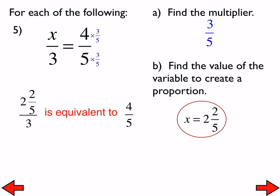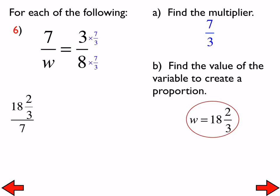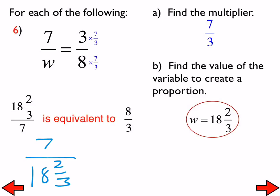Go ahead and try number 6, and then we'll go on to the word problems. For number 6 we have 7 over W equals 3 over 8, trying to find the value of W. The multiplier here is 7 thirds, so we multiply 8 by 7 thirds, which gives 56 thirds or 18 and 2 thirds. So our proportion is 7 over 18 and 2 thirds is equivalent to 3 over 8.